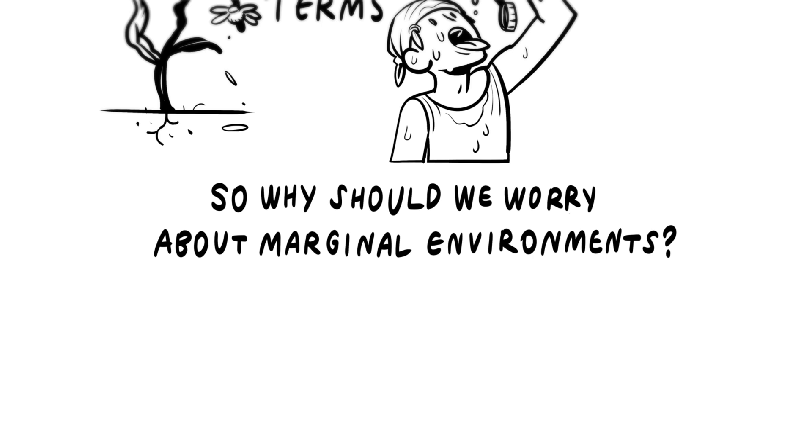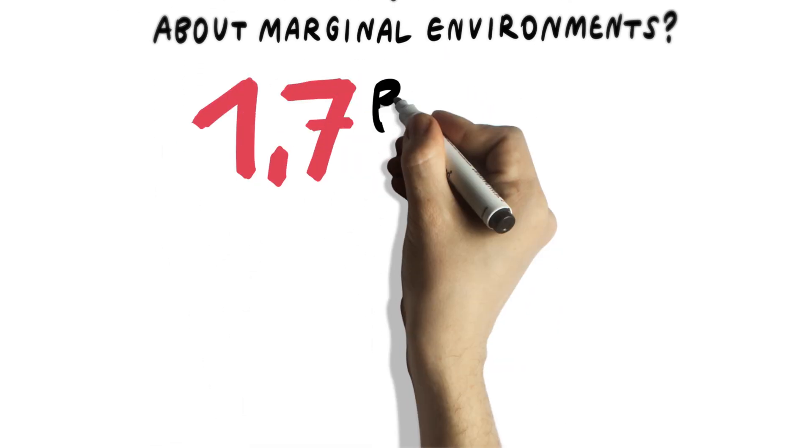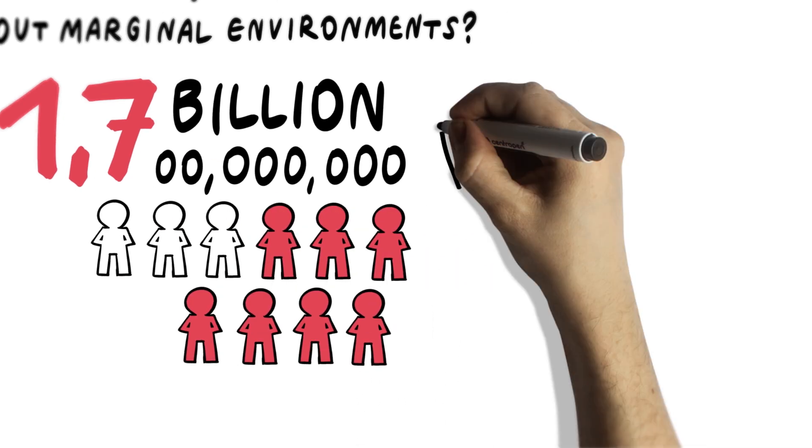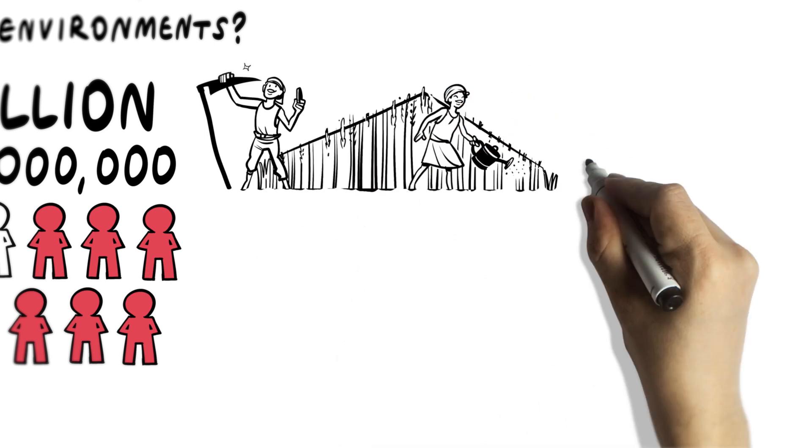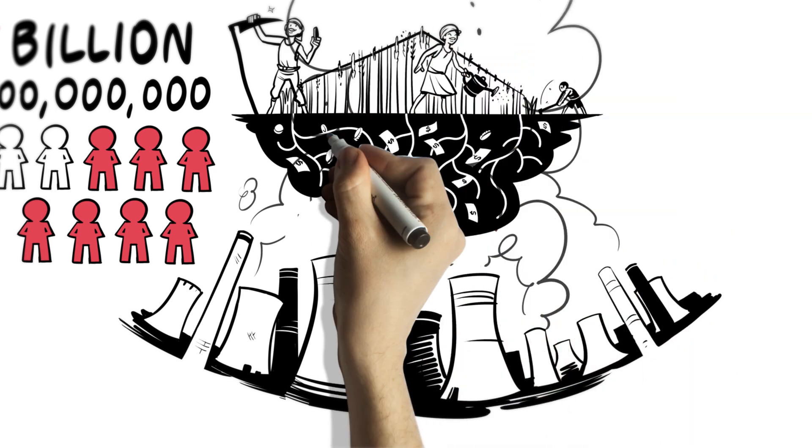So why should we worry about marginal environments? Well first, because by one estimate some 1.7 billion people live there, including many of the world's poorest. Many of them are smallholders and depend on farming for their food and income. But climate change and other factors are putting their livelihoods at risk.